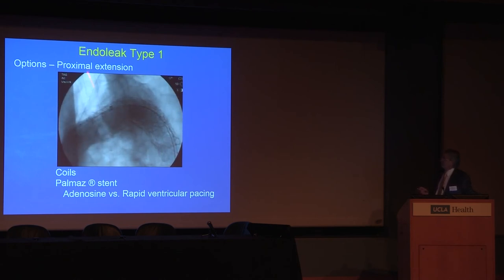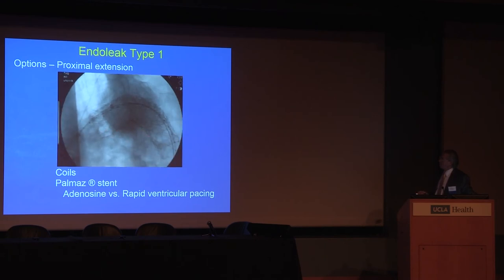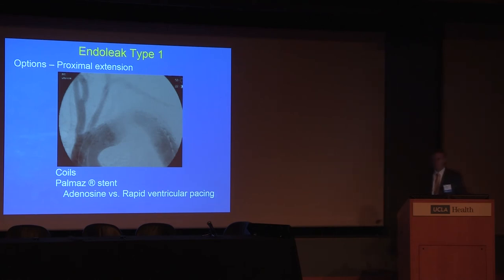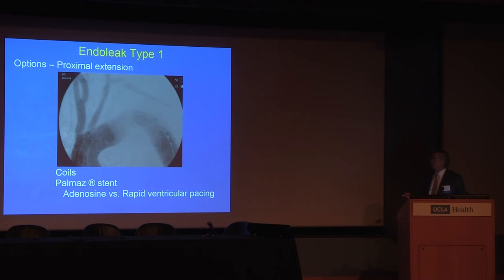Here's a patient with a Type 1a endoleak — you can see it right here. The options are to place coils or, what I prefer, a Palmaz stent. The key to placing a Palmaz stent here is that you must use adenosine or rapid ventricular pacing. One problem with adenosine is anesthesiologists never give enough — you have about three seconds to deploy the Palmaz stent, and it's not going to happen. If you're not ready for rapid pacing, there's nothing wrong with a Type 1 endoleak for 24 hours; come back the next day with rapid pacing set up.